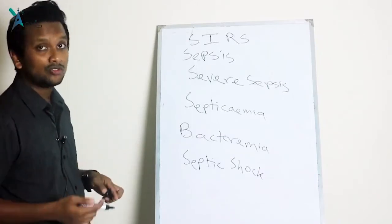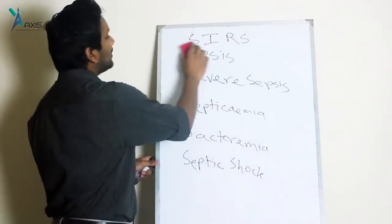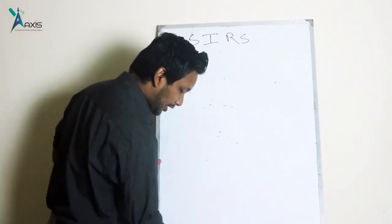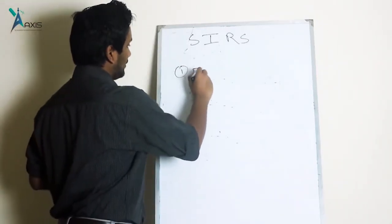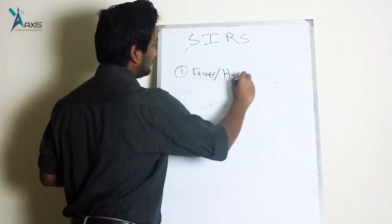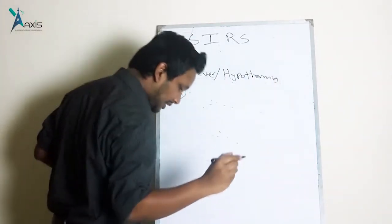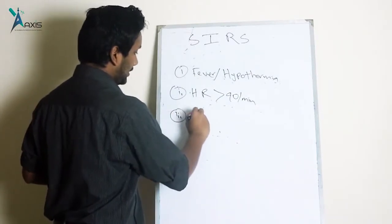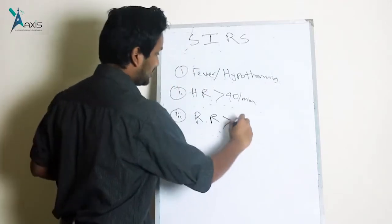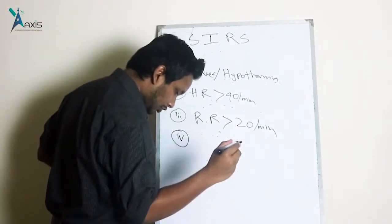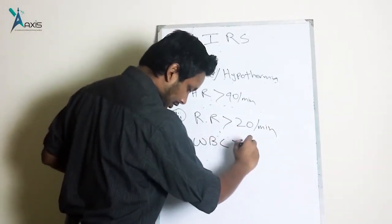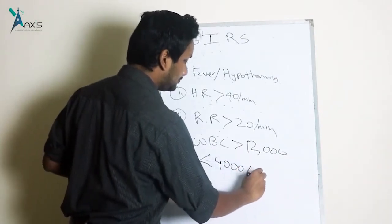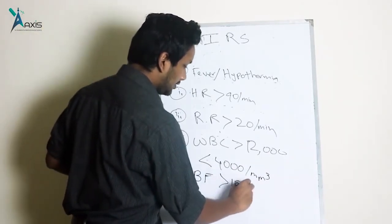The terms are very well defined and the treatment differs based on these terms. The systemic inflammatory response syndrome — SIRS — can be defined as a condition when we have any two of the following: fever or hypothermia, heart rate more than 90 beats per minute, respiratory rate more than 20 breaths per minute, or WBC count either more than 12,000 or less than 4,000 per mm³.